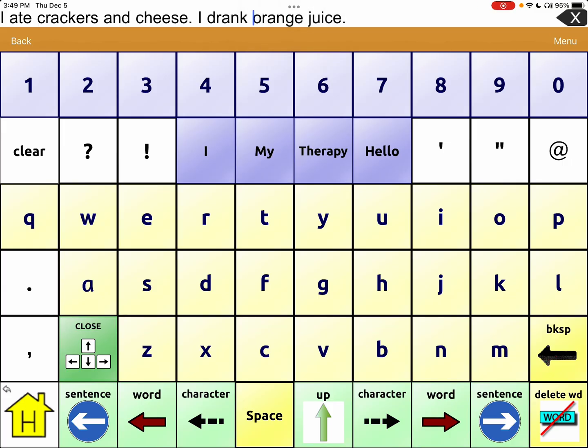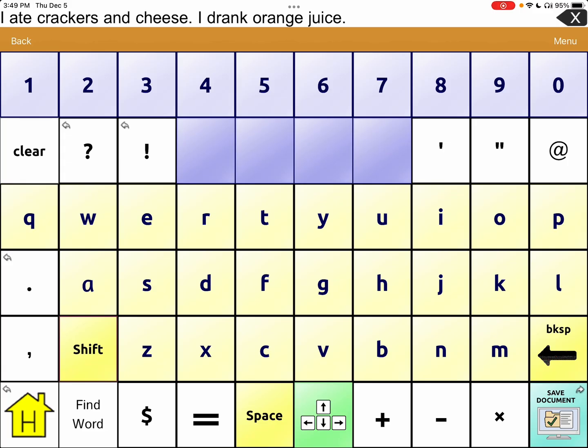So now it says, I ate crackers and cheese. I drank orange juice. Nice. So the other way you can do that is, if you're done editing and you want to close out these arrows, you just hit close up there. And it'll give you back the shift button and the plus sign and all that at the bottom.